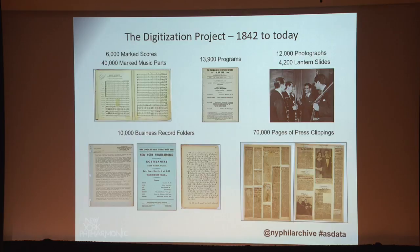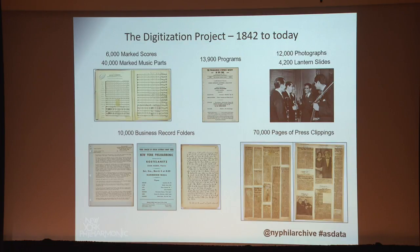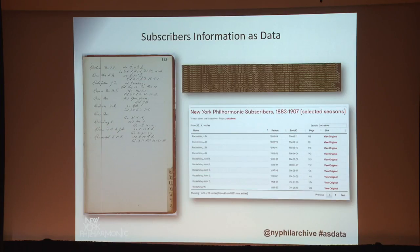We have a complete set of programs going back to 1842, from which we have also extracted data. Photos, of course, 10,000 folders of business records ranging from minutes, posters, correspondence, down to ephemera like receipts. As well, 70,000 pages of press clippings dating back to the very early 20th century — essentially every mention of the New York Philharmonic in the American press, both national and local, as well as a lot of international press. The Subscribers Project: we have information relating to our subscribers — people who bought more than one ticket or people who bought tickets to a series — dating all the way back to 1842.